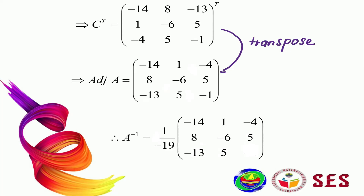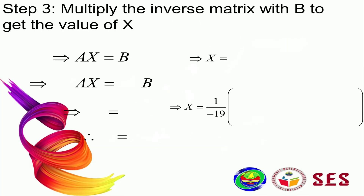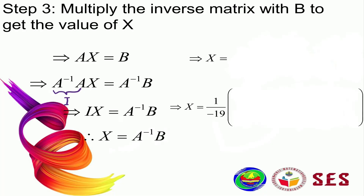Step 3: we want to find the value of x. We need to multiply A inverse on both sides of AX equals B. We know that A inverse multiplied with A gives the identity matrix I, and I multiplied by X gives X. Therefore X equals A inverse multiplied by B. That is why we needed to find the inverse first.